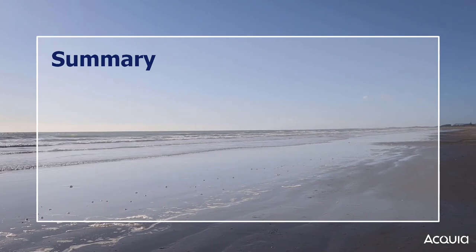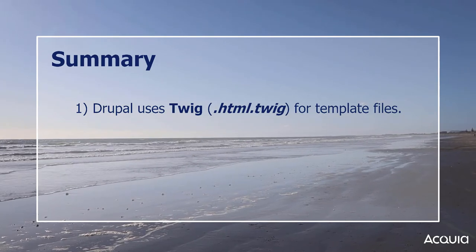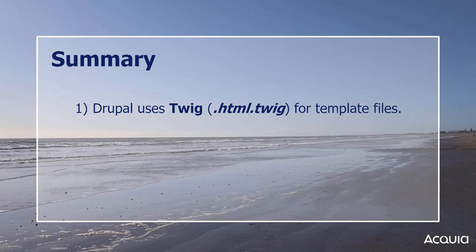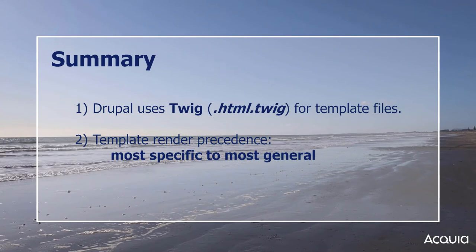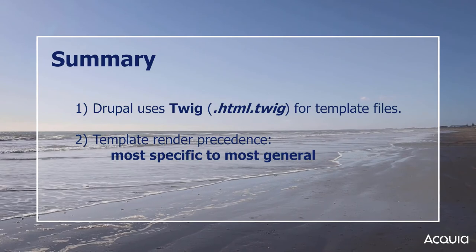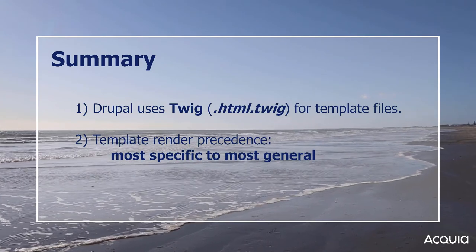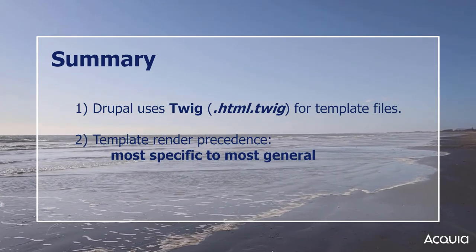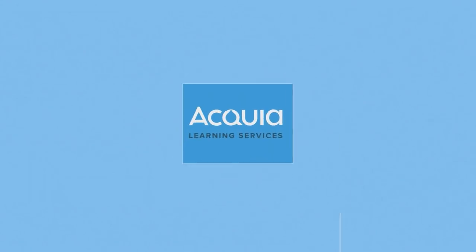In summary, remember that Twig is the templating engine Drupal leverages to reduce security risks. Drupal template files end in the .html.twig extension. Drupal renders templates in order of precedence from most specific to most broad — field templates, then the node template, then the region, then the page, concluding with the template called html. Great job completing another video — see you in the next one. Happy learning!